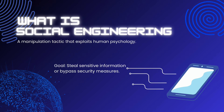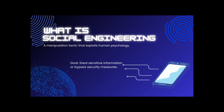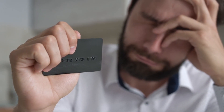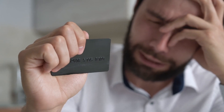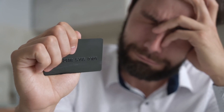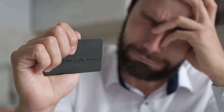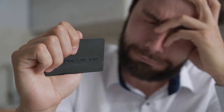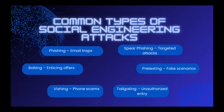Social engineering is a tactic where attackers manipulate people into revealing sensitive information or performing actions that compromise security. What makes it so dangerous is that it exploits human behavior and trust rather than technical vulnerabilities. Let's take a closer look at the most common types of social engineering attacks.